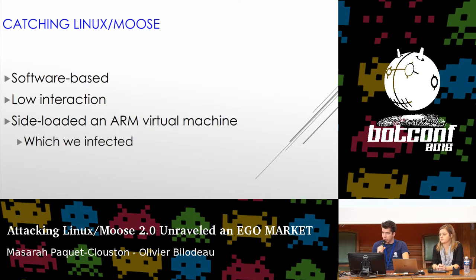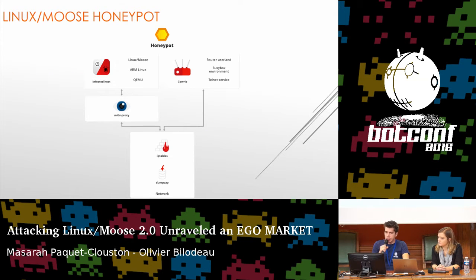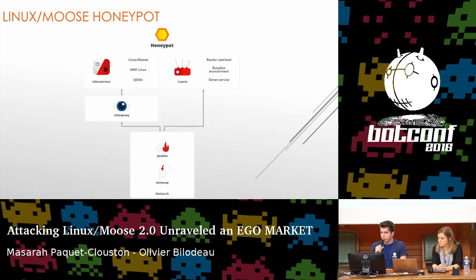We decided to go software-based instead of hardware because it was more flexible and we could deploy it worldwide. We deployed it in Russia, Singapore, Brazil, and several other places. We expected traffic to differ by country, which didn't happen. We went low-interaction so we could let it run without constant monitoring. We decided to side-load an ARM virtual machine so that instead of running a fake client, we could run the real malware. The architecture has on the left an infected host — a QEMU system, ARM Linux Debian image — with Linux MOOSE deployed on it, a man-in-the-middle proxy process in front. On the right we had the Cowrie honeypot emulating the router userland, BusyBox, and telnet service, using IP tables to route traffic accordingly, with full packet capture throughout.